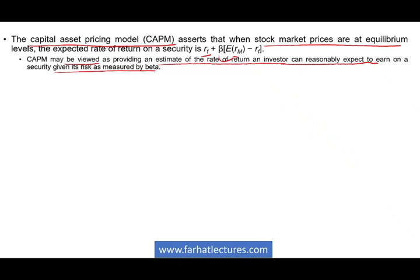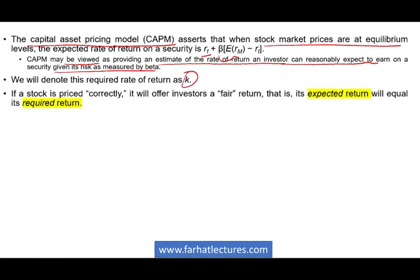CAPM is one measurement. What's the CAPM of the stock? We know based on our holding period the stock would return 16.67%. We're going to denote this required rate of return as K. If a stock is correctly priced, it will offer an investor a fair return — what you expect will equal the required return K. This is what CAPM basically gives you: what you expect should equal your required return, and the stock will be fairly priced.